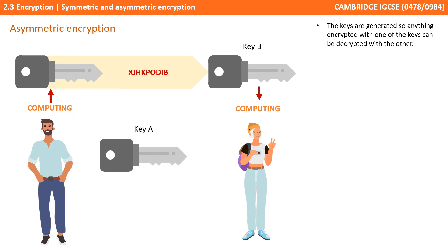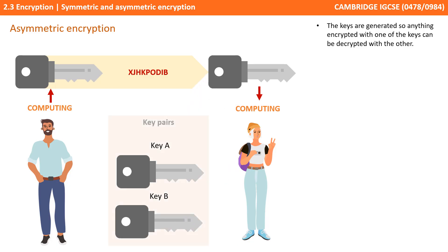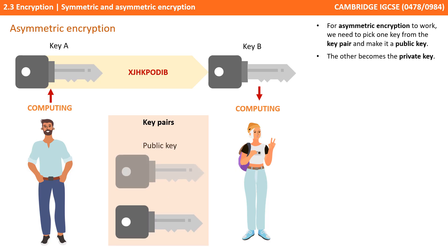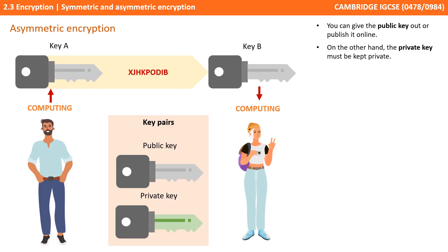The keys are generated so anything encrypted with one of the keys can be decrypted with the other, and together these keys form what we call key pairs. For asymmetric encryption to work, we need to pick one key from the key pair and make it our public key. The other becomes our private key. As the name suggests, the public key can be made public — you can give it out and publish it online. Public keys are actually often stored in secure servers known as keysafes in the cloud.